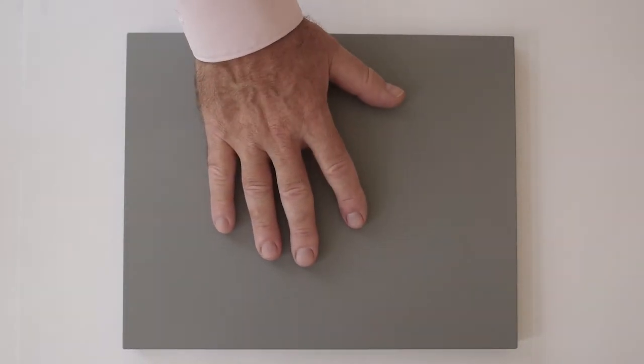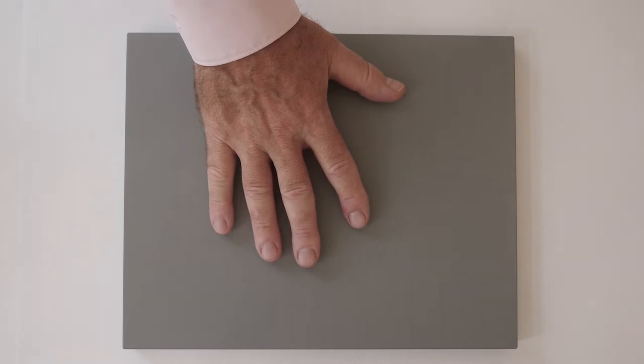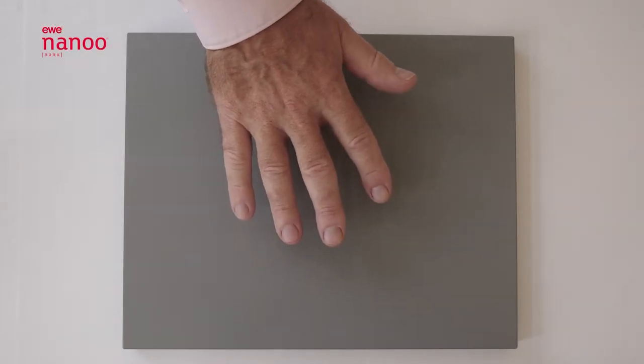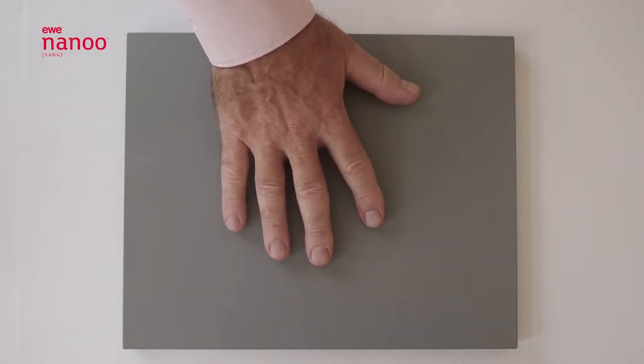This is a short video to demonstrate the unique properties of the new material that we at EVKUKAN are making beautiful fitted kitchens from. We call it NANU in reference to the nanotechnology employed in its manufacture.